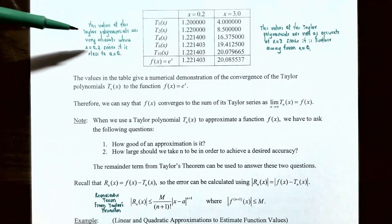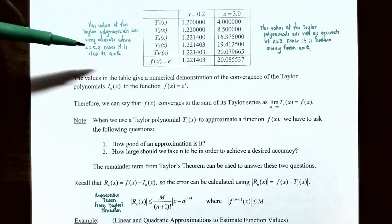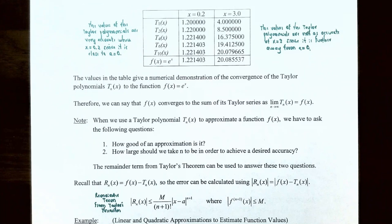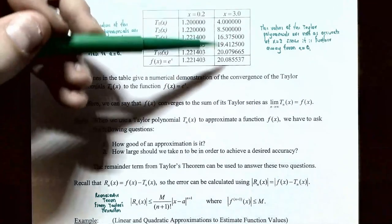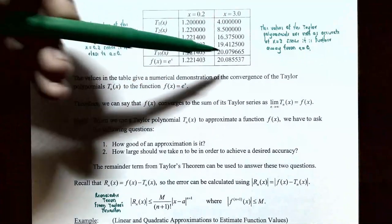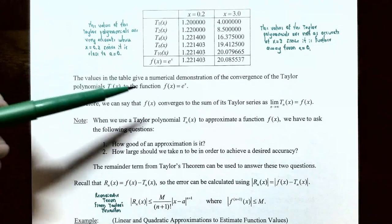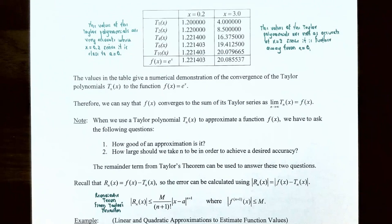The Taylor polynomials are extremely accurate whenever x = 0.2, since it's very close to the center of the Maclaurin series where a equals zero. However, whenever x = 3, the approximations are not as accurate because x = 3 is much further away from the center. The table gives a numerical demonstration that the convergence of T_n(x) to f(x) = e^x needs to be very close to the center to have an accurate approximation.